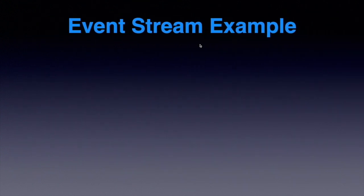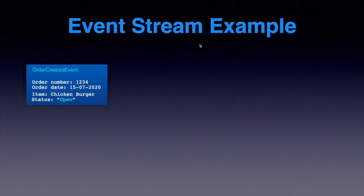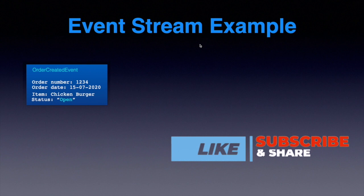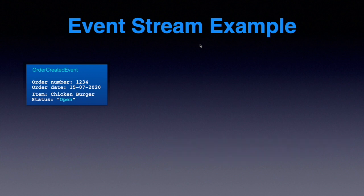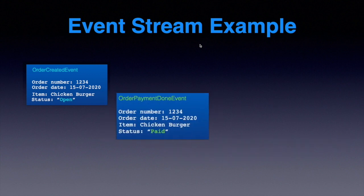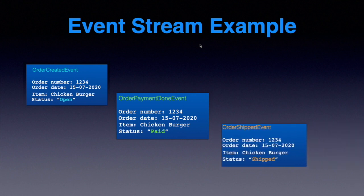For example, if you ordered a chicken burger from McDonald's, an order created event is generated with the order number, order date, item chicken burger, and status open. Once your order is paid, another event called order payment done is created with status paid. Once payment is done, an order shipped event will be created. There will be an insert statement to insert all these events into the event store.